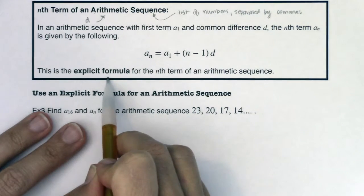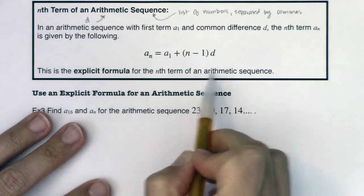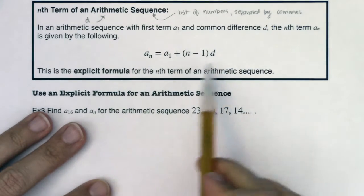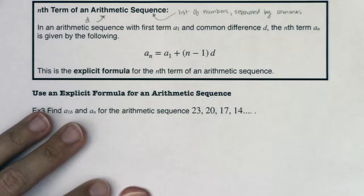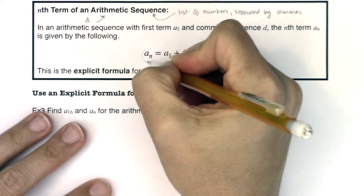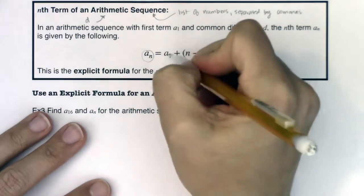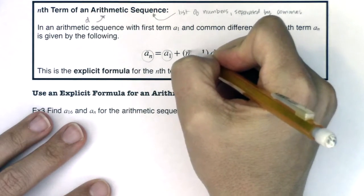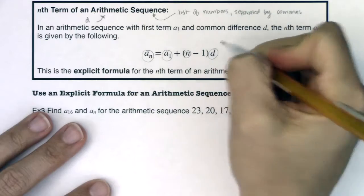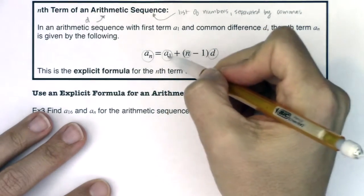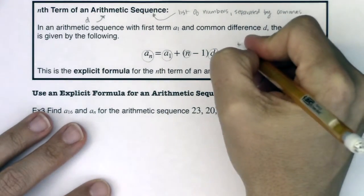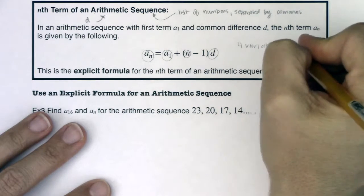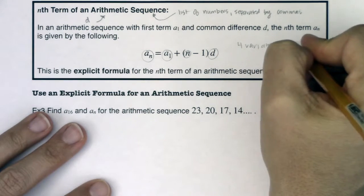So a_n equals a_1 plus (n minus 1) times d. This is the explicit formula for the nth term of an arithmetic sequence. Looking at this formula, I want to talk about the four variables: a_n, a_1, n, and d. There are four variables in total in this formula.